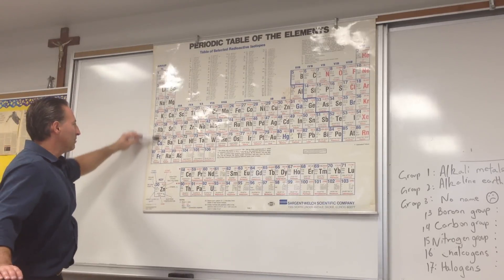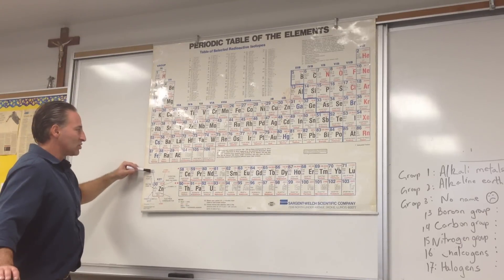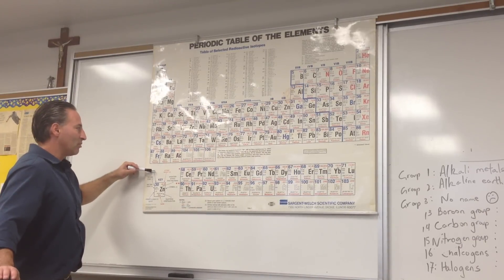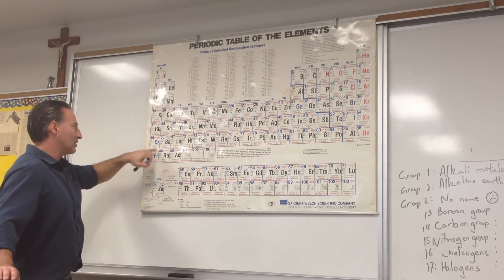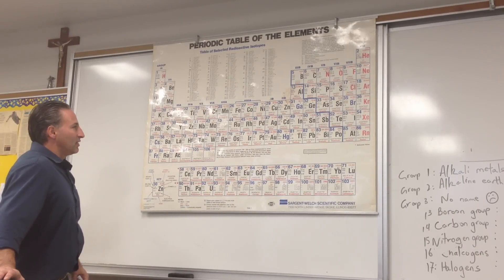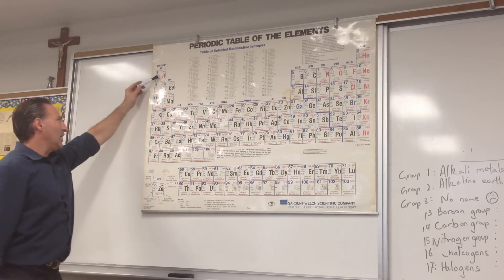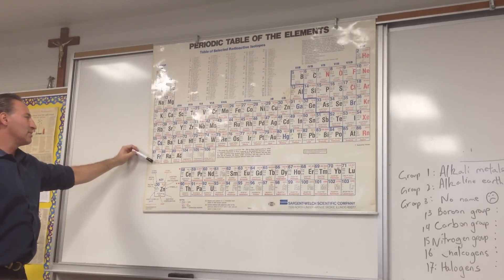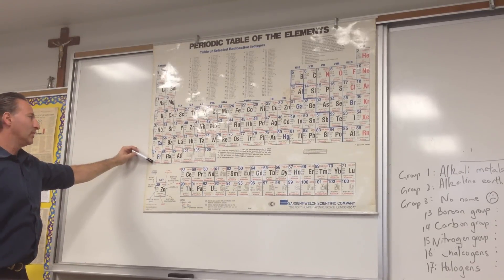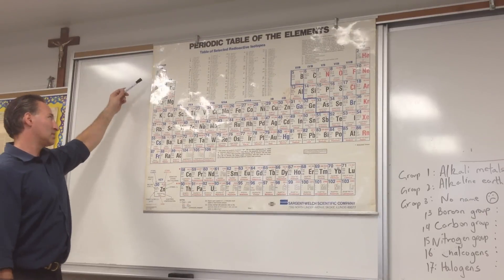Group 1 is called the alkali metals. Alkali metals will typically take on a charge of +1 when they form ions, because they lose that S electron to become P6, which resembles the stable noble gas configuration. The alkali metals are memorized by saying: H-Li-Na-C, Rubidium, Cesium, Francium. I'm only making a mnemonic out of part of it, but that's what works for me.